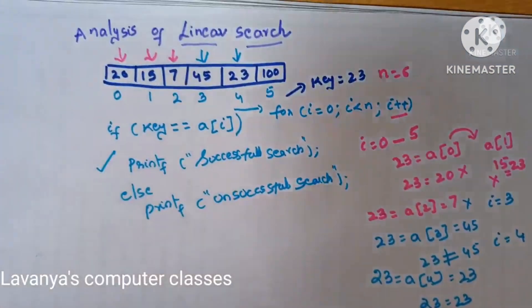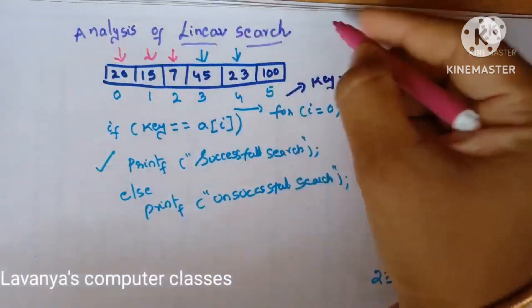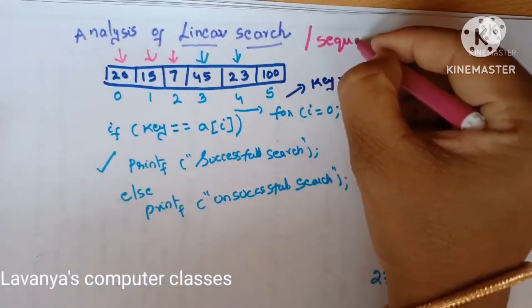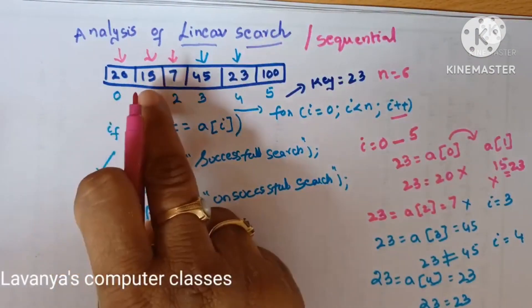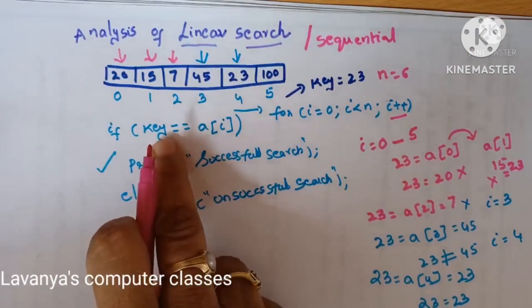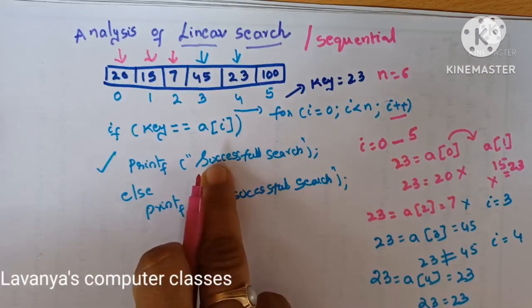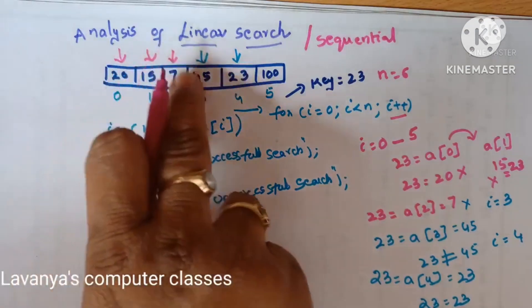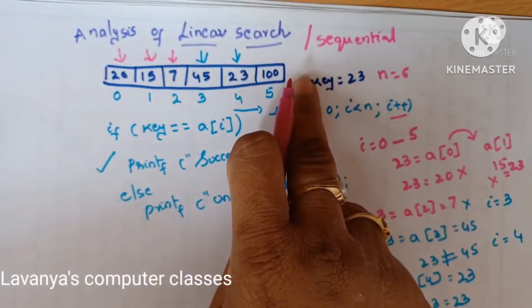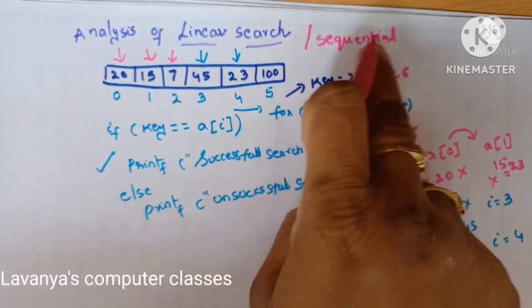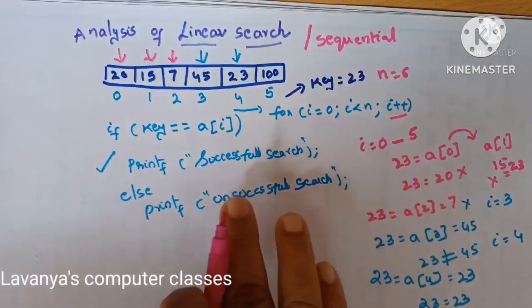So like this, the linear search algorithm works. Linear search is also known as sequential search. Sequential search means sequentially, one after another, each element is compared with the key element. Whenever both are same, we immediately print successful search; otherwise check one after another till the last element. If the key element is not found at the end of the list, it is called an unsuccessful search. This is the concept of linear search.